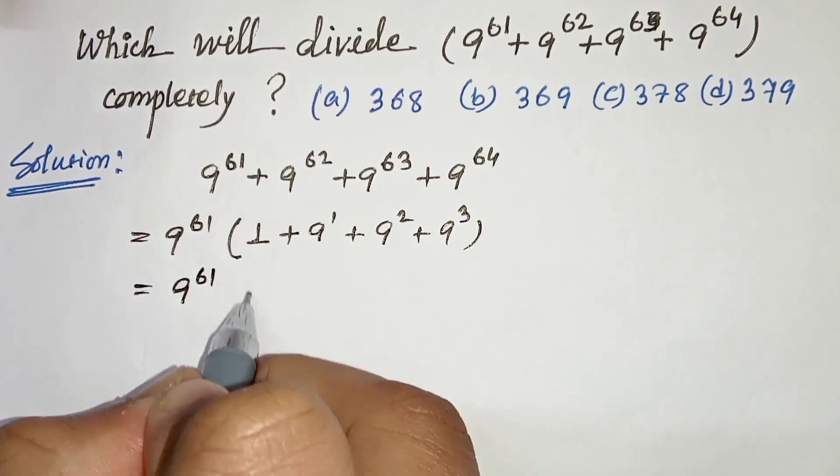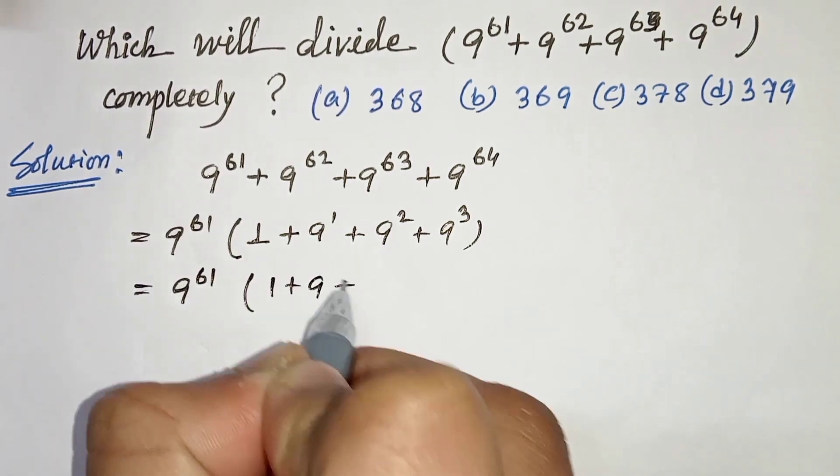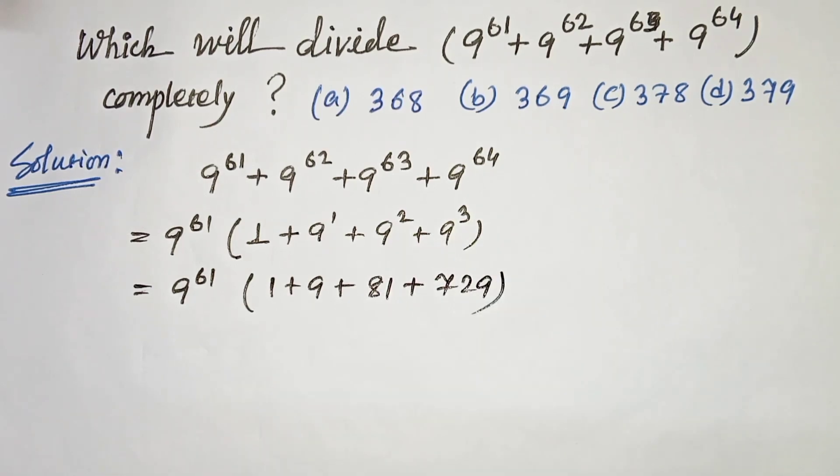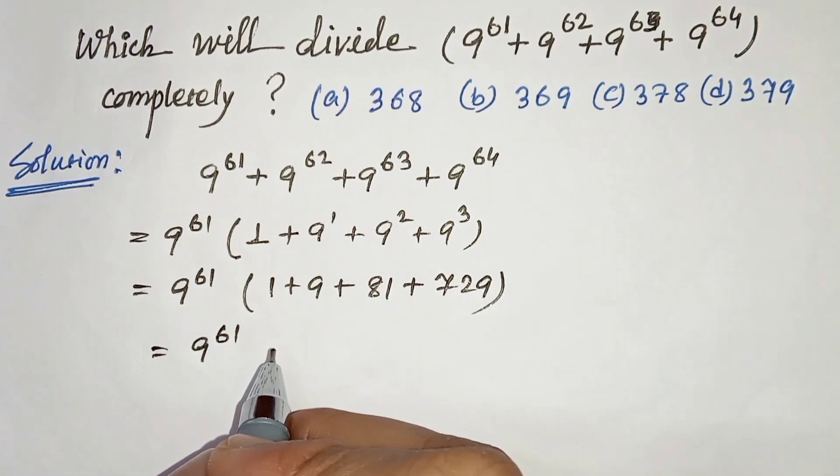And the next step, we can write 9 to the power 61 times (1 plus 9). 9 square is 81, 9 cube is 729. If we add all this, we will get 729 plus 1 is 730, and 81 plus 9 is 90. So 730 plus 90 is 820.